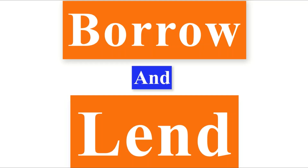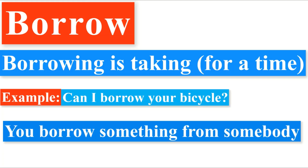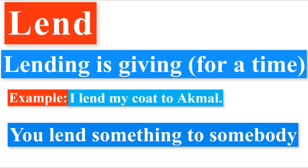The first pair of words is 'borrow' and 'lend.' Borrowing is taking something for a time being. For example: 'Can I borrow your bicycle?' You borrow something from somebody — it means you take something from someone. On the other hand, lending is giving for a time being. For example: 'I lend my coat to Akmal.' You lend something to someone — it means you give something to someone.